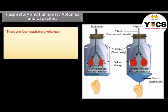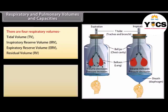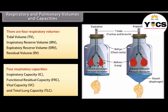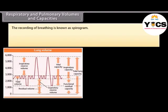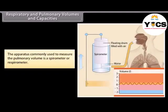There are four respiratory volumes: Tidal Volume (TV), Inspiratory Reserve Volume (IRV), Expiratory Reserve Volume (ERV), and Residual Volume (RV). There are also four respiratory capacities: Inspiratory Capacity (IC), Functional Residual Capacity (FRC), Vital Capacity (VC), and Total Lung Capacity (TLC). The recording of breathing is known as a spirogram. The quantities of air that lungs can receive, hold, and expel under different conditions are called pulmonary volumes, and combinations of two or more pulmonary volumes are called pulmonary capacities. The apparatus commonly used to measure pulmonary volume is a spirometer or respirometer.